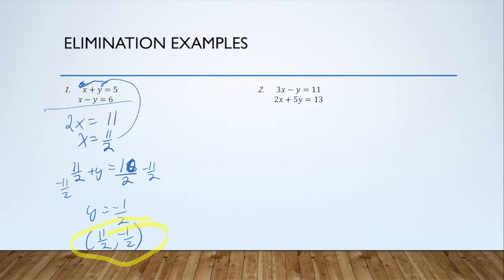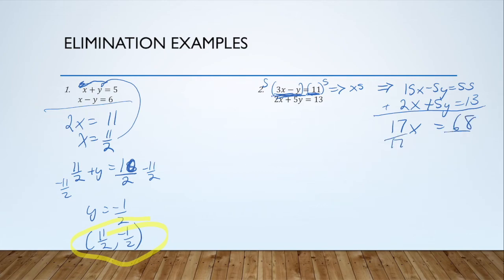Problem 2 is a little bit more difficult because I don't have any coefficients that are additive opposites. I do have a negative y and a positive 5y. If I multiply this first equation by 5, that would give me 15x minus 5y equals 55. I could add that to 2x minus 5y equals 13. Because I multiply both sides of the equation by 5, I maintain this equation's equality. That's a valid mathematical move. Now I can add these. I've got 17x is 68. I divide both sides by 17 and I get x equals 4.